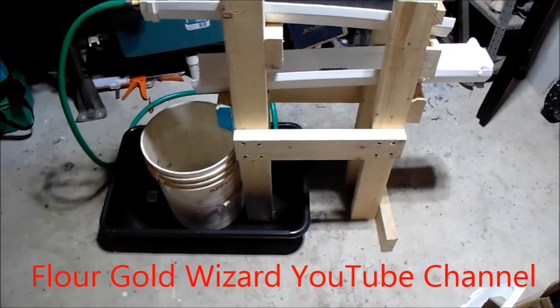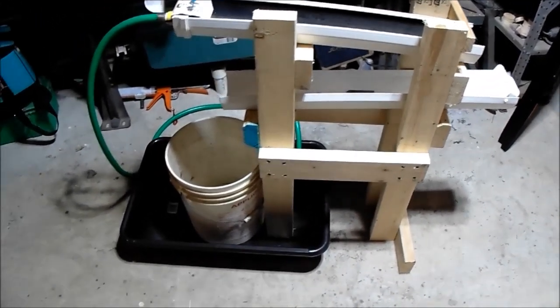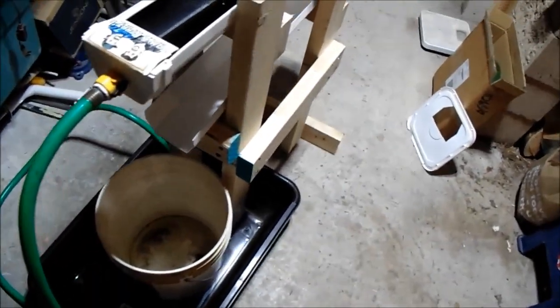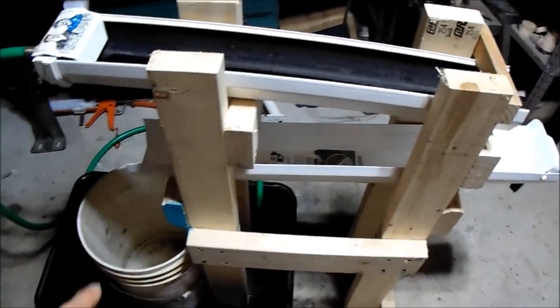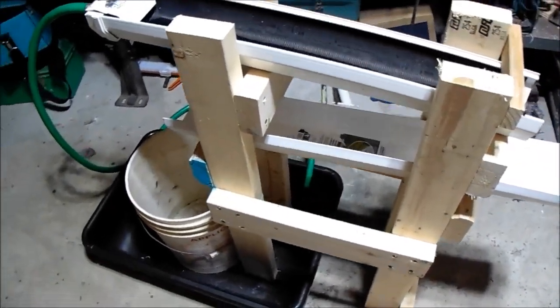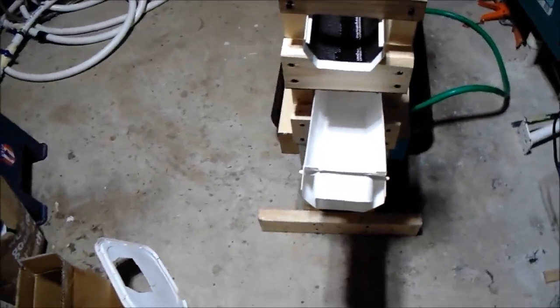I picked up some 2x4s from a job site they were going to throw in a dumpster. Got those all screwed together. Set these sluices up on a 5 degree angle. Hopefully that will be enough and not too much to capture the fine gold.